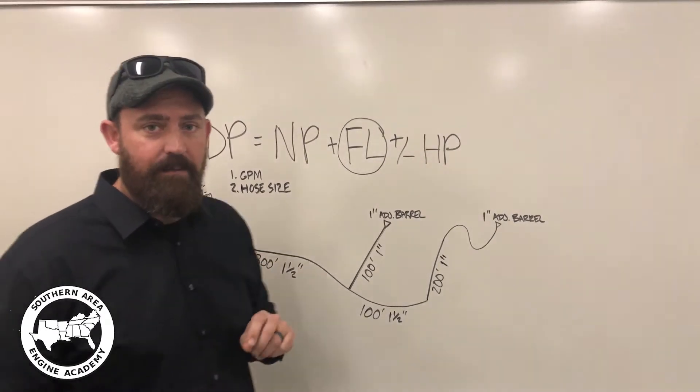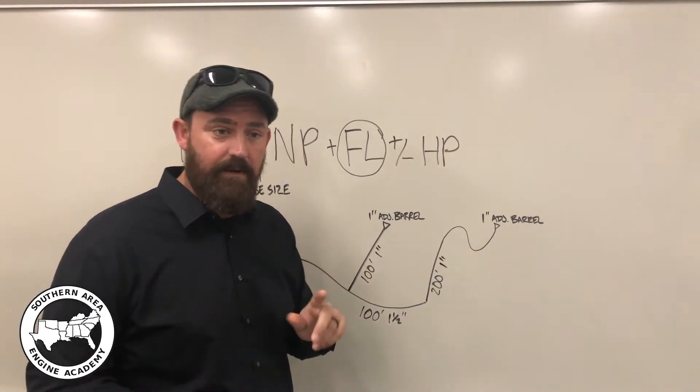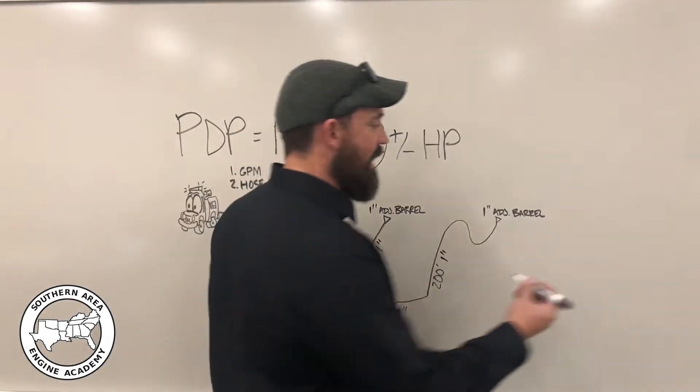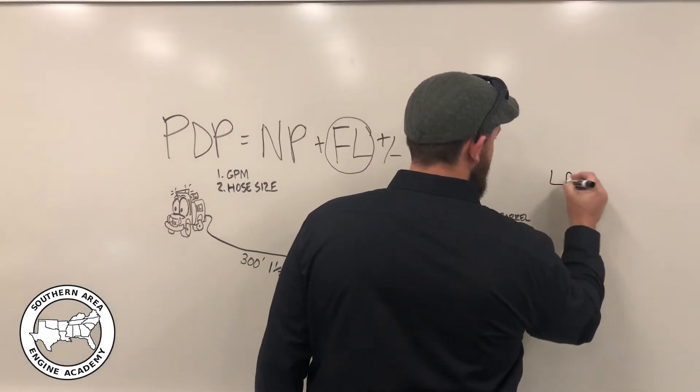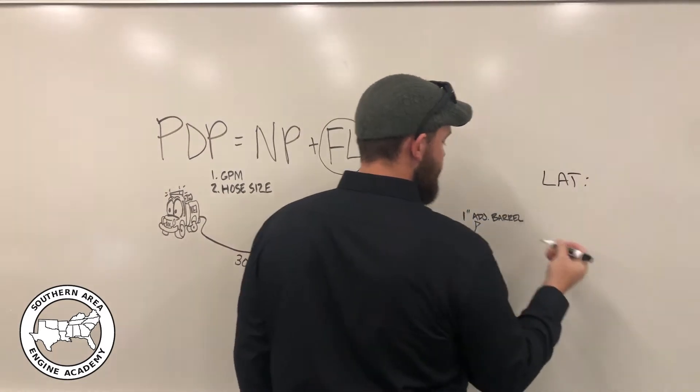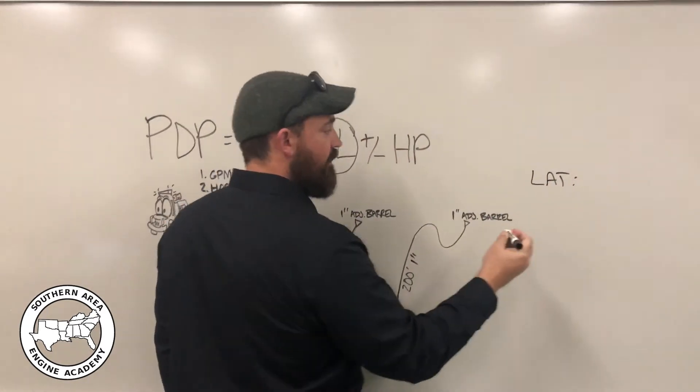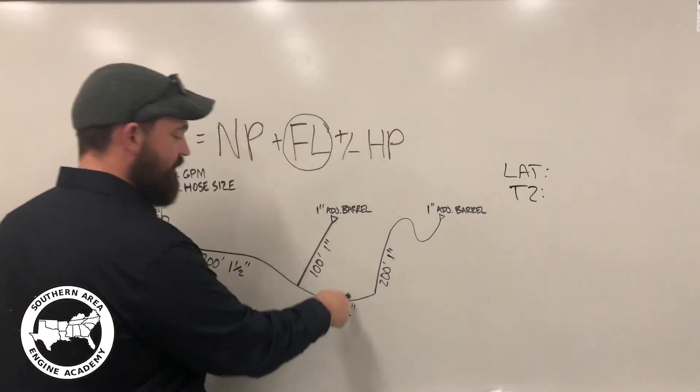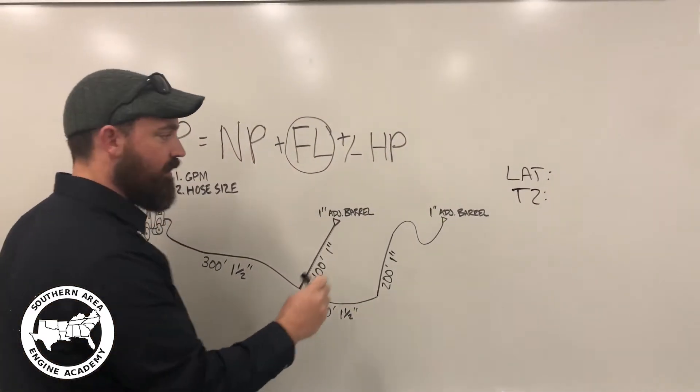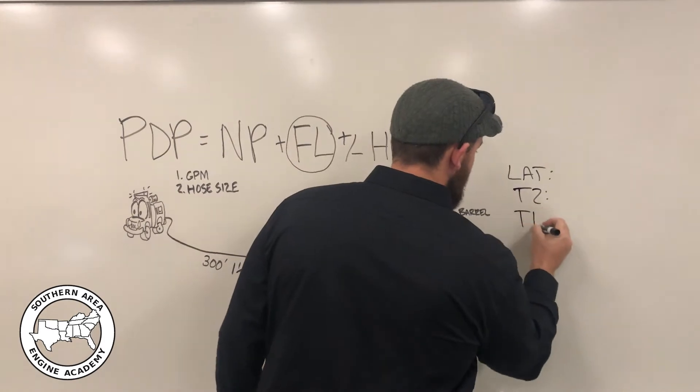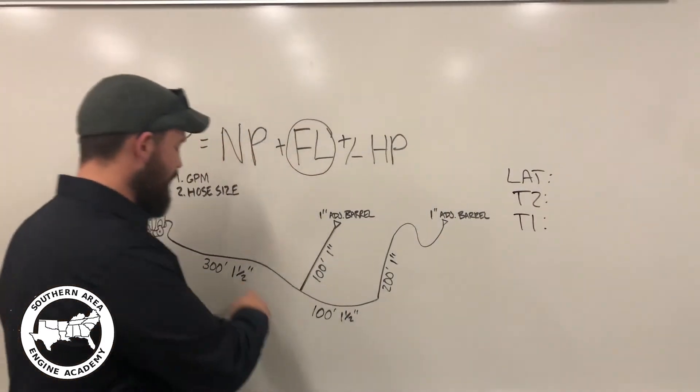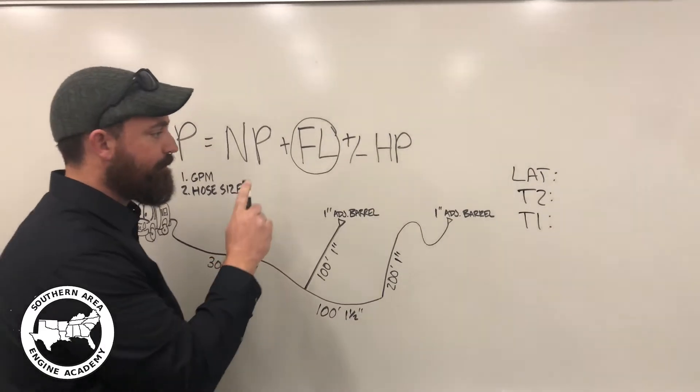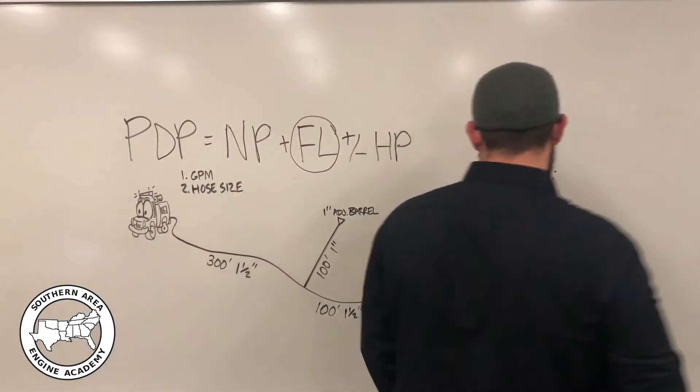So a couple things that will help your brains keep from getting scrambled are, one, to always work the problem backwards and then always write out the different sections off to the side so you can visualize it. So that lat represents the lateral. Trunk two represents this section, the second piece of trunk moving from the truck. And trunk one will represent this first trunk, this 300 feet. That's a different hose diameter.